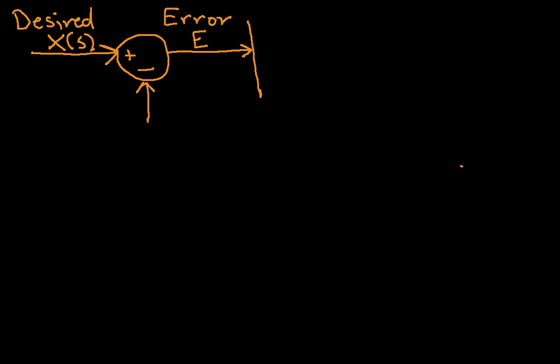We take that error and we run it through a controller. And the controller gives us an input to the system, or to the plant, which we're going to call U. Now, this is potentially confusing in the sense that the input to a plant is oftentimes called U. We have also defined a unit step function. Hopefully, we'll be able to keep those straight.